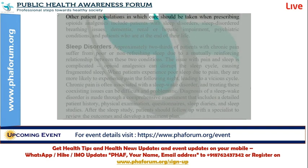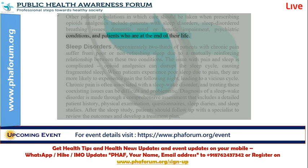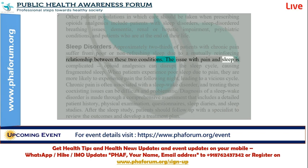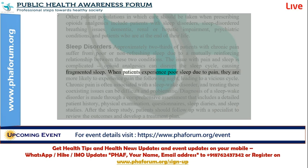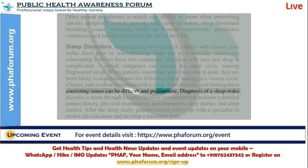Other patient populations in which care should be taken when prescribing opioid analgesics include patients with sleep disorders, sleep disordered breathing issues, dementia, renal or hepatic impairment, psychiatric conditions, and patients who are at the end of their life. Approximately two-thirds of patients with chronic pain suffer from poor or non-refreshing sleep due to a mutually reinforcing relationship between these two conditions. Opioid analgesics can disrupt the sleep cycle, causing fragmented sleep. When patients experience poor sleep due to pain, they are more likely to experience pain the following night, leading to a vicious cycle. Chronic pain is often associated with a sleep-wake disorder, and treating these coexisting issues can be difficult and problematic.